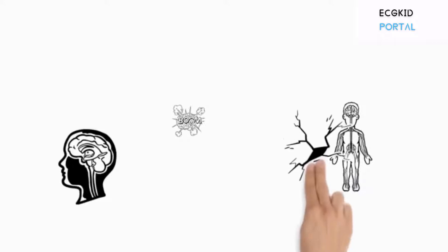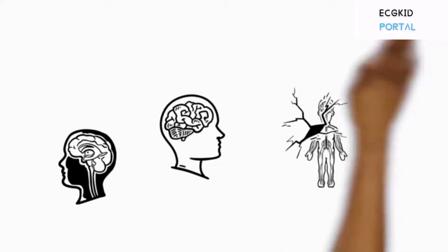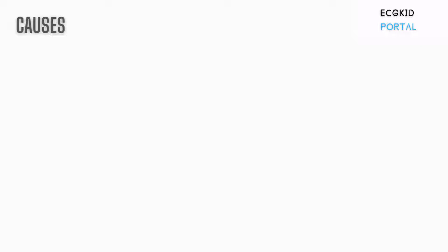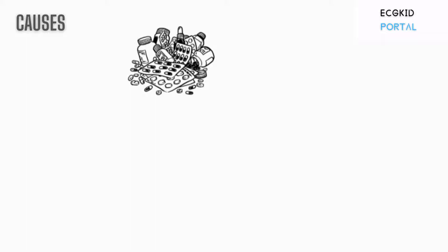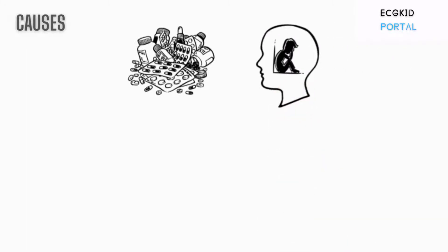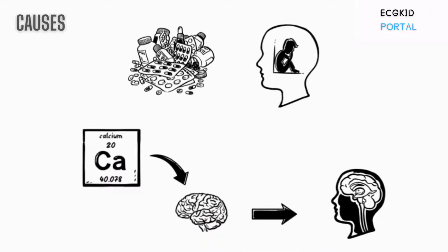A hemorrhagic stroke occurs when a blood vessel bursts in the brain, and blood builds up and damages surrounding brain tissue. Causes include uncontrolled high blood pressure, over-treatment with blood thinners, bulges at weak spots in blood vessel walls called aneurysms, trauma such as a car accident, and protein deposits in blood vessel walls that lead to weakness in the vessel wall and ischemic stroke leading to hemorrhage.